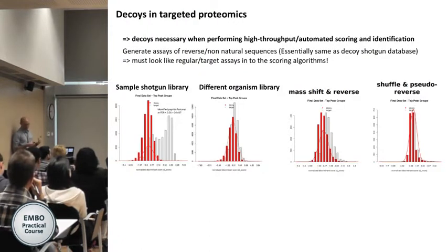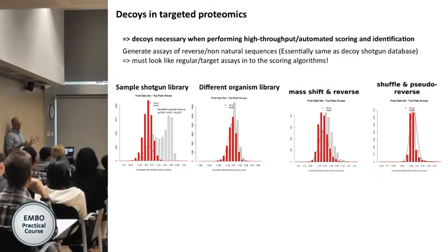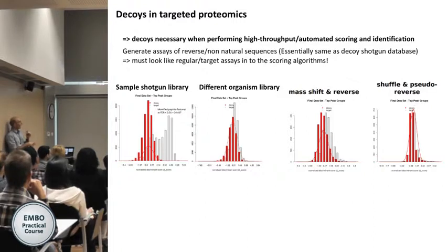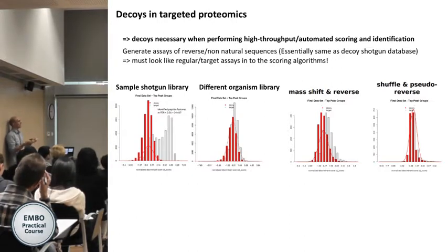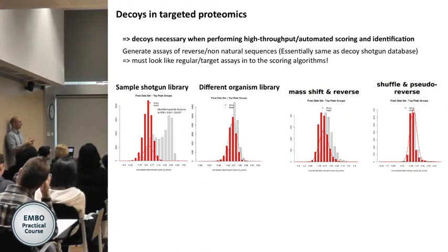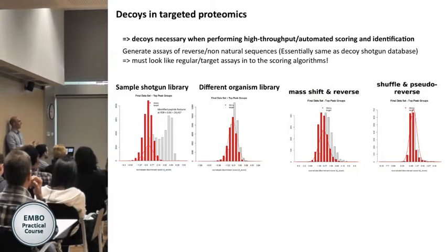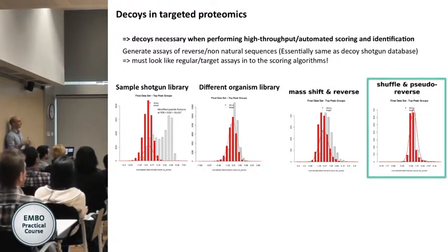The concept of decoys in SWATH is conceptually different from shotgun decoys. Decoy assays have non-natural sequences — they should not exist in nature — and you extract them from your data just like targets. The software itself should not be able to distinguish targets from decoys; it should blindly test both, and only when a decoy overlaps well with your score qualities can you assess your false discovery rate. We use a shuffled pseudo-decoy strategy, which gives the best results for identifying your targets at controlled confidence.